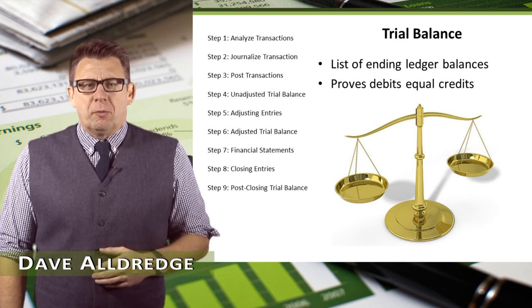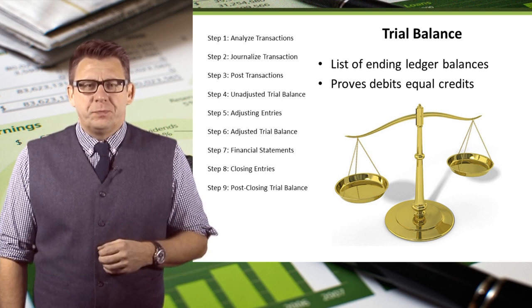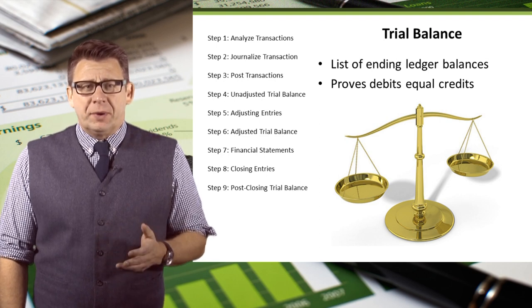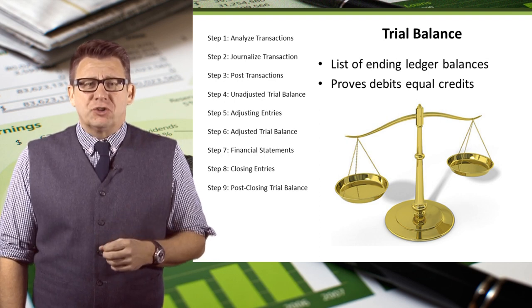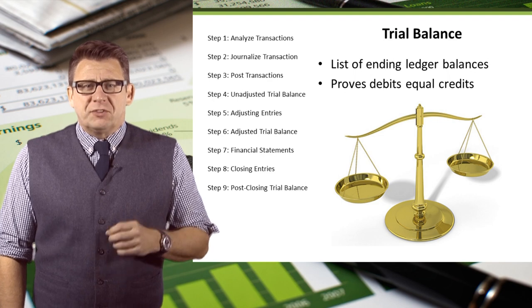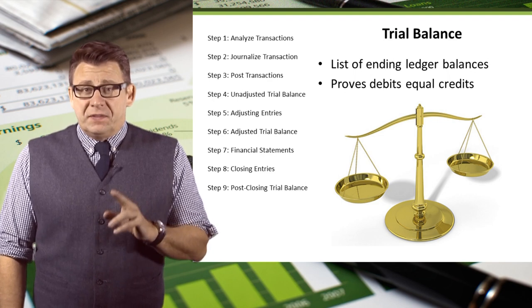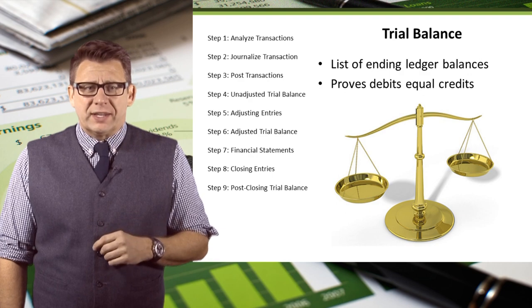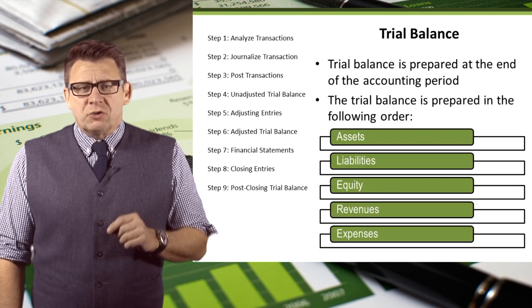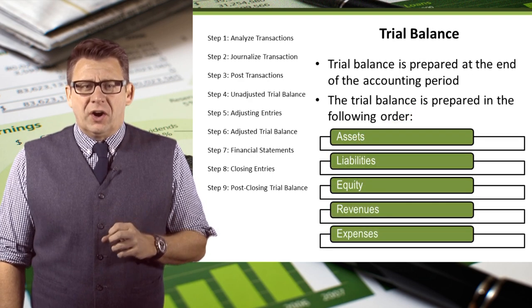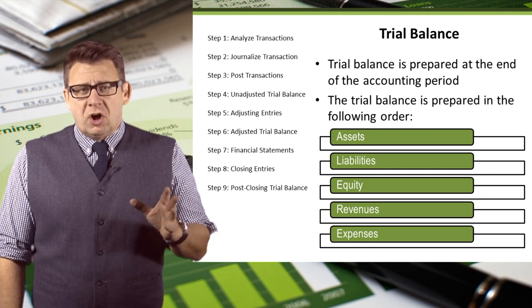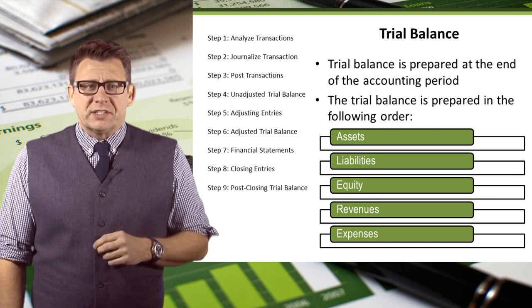Preparing the unadjusted trial balance is the fourth step in the accounting cycle. A trial balance is a list of company accounts and their ending ledger balances. Its primary purpose at this step is to make sure that debits equal credits. The trial balance is prepared at the end of the accounting period, as are all of the subsequent steps in the accounting cycle.